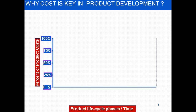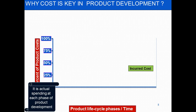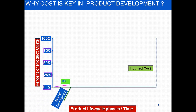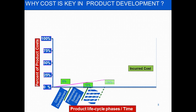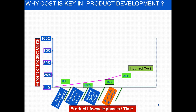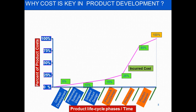Why is cost key in product development? Let's look at this graph of percentage of product cost versus product life cycle phases. The incurred cost is the actual spending at each phase of product development. At the conceptual stage, only 5 percent of the total budgeted cost is spent. By preliminary system design, 10 percent is spent. By detailed product design, 15 percent. By process and tool design, 25 percent. By ramp-up, 85 percent would have been spent, and by product support and end of life, typically 100 percent of the budgeted cost is spent.